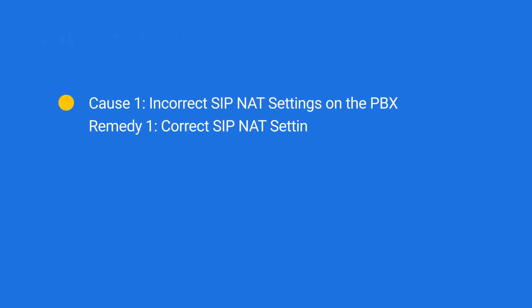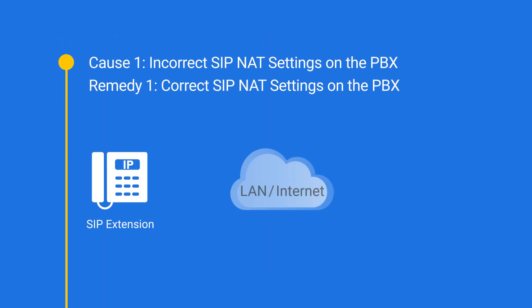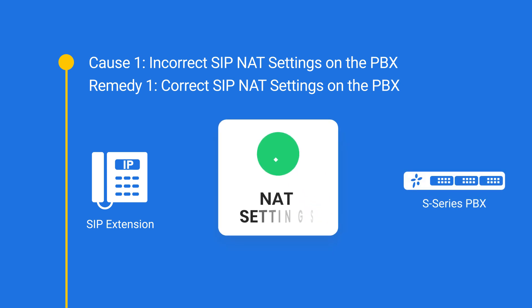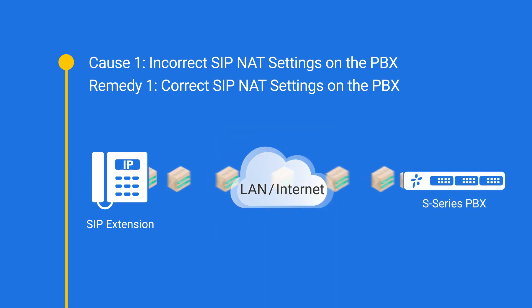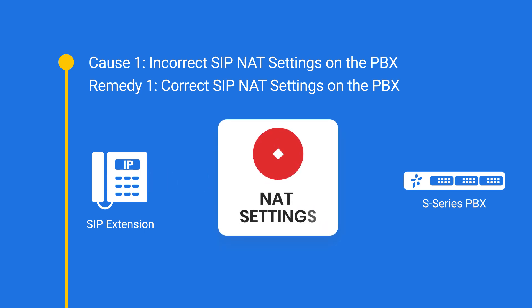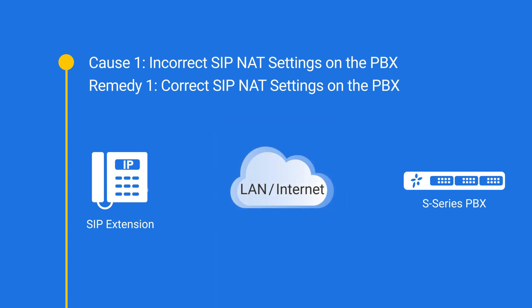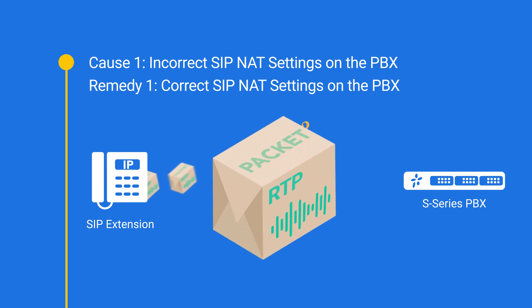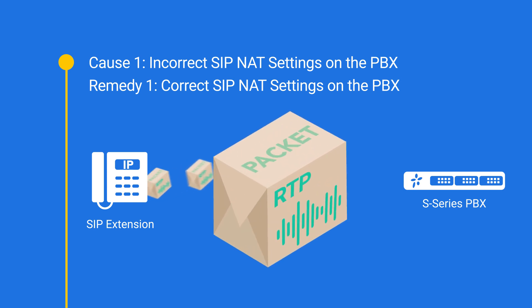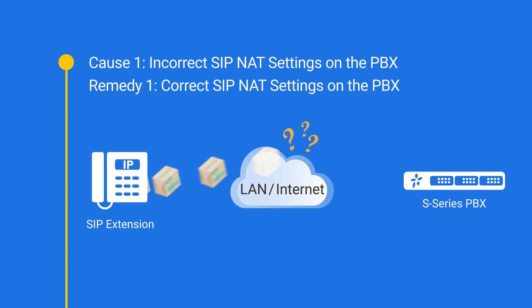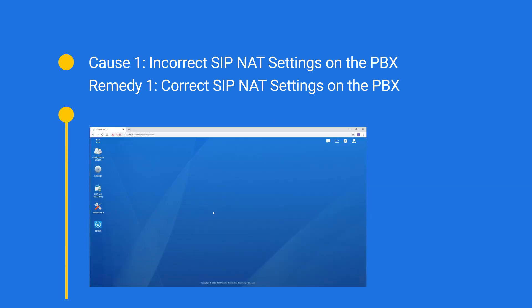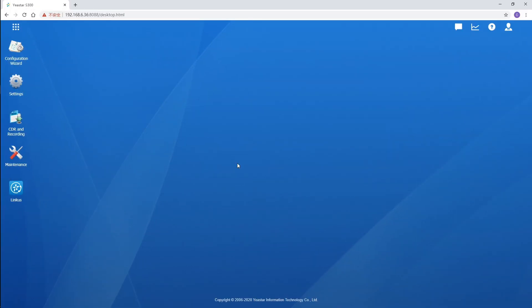First, let's talk about SIP NAT settings. It is a feature that ensures the SIP extension can send SIP packets to the PBX successfully via LAN and the internet. If not configured correctly, the SIP extension won't know where to send the RTP packets — a type of SIP packet which carries the voice stream — so the problem occurs. Let's log in to the PBX web GUI.